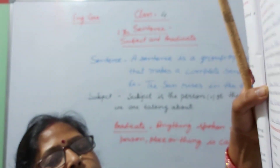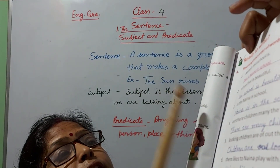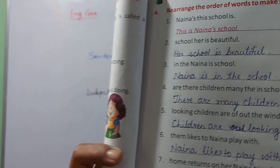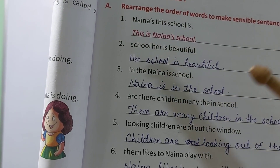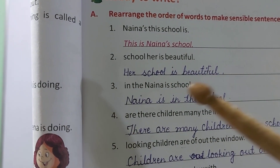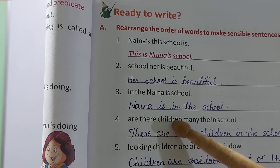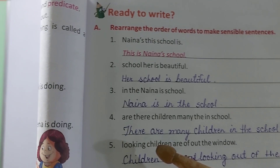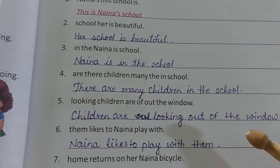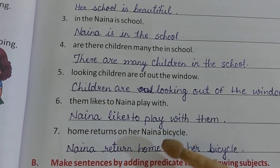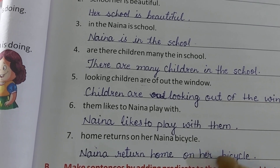There are some exercises which you can fill up. This is Nana's school. Her school is beautiful. Nana is in the school. There are many children in the school. Children are looking out of the window. Nana likes to play with them. Nana returns home on her bicycle.